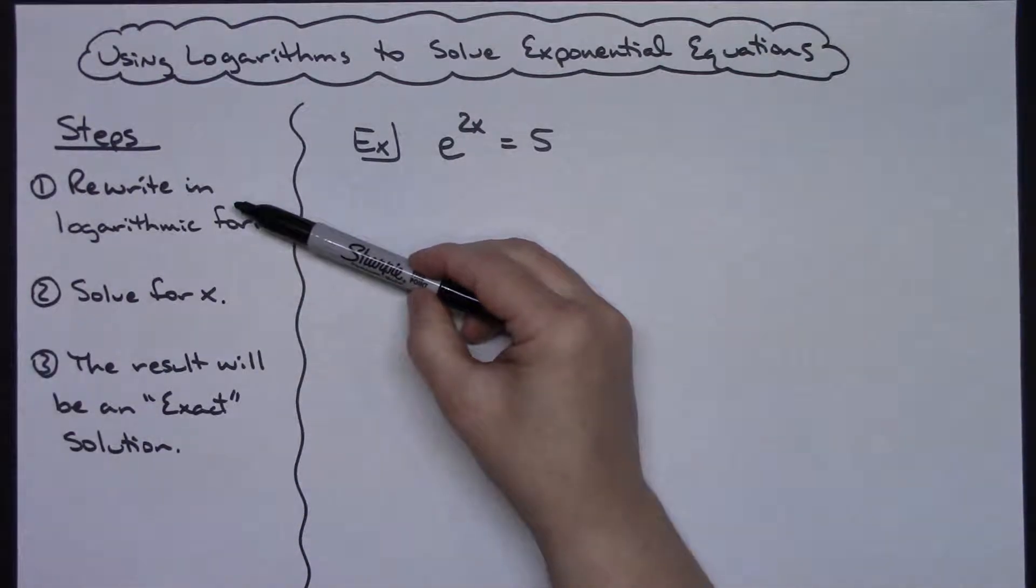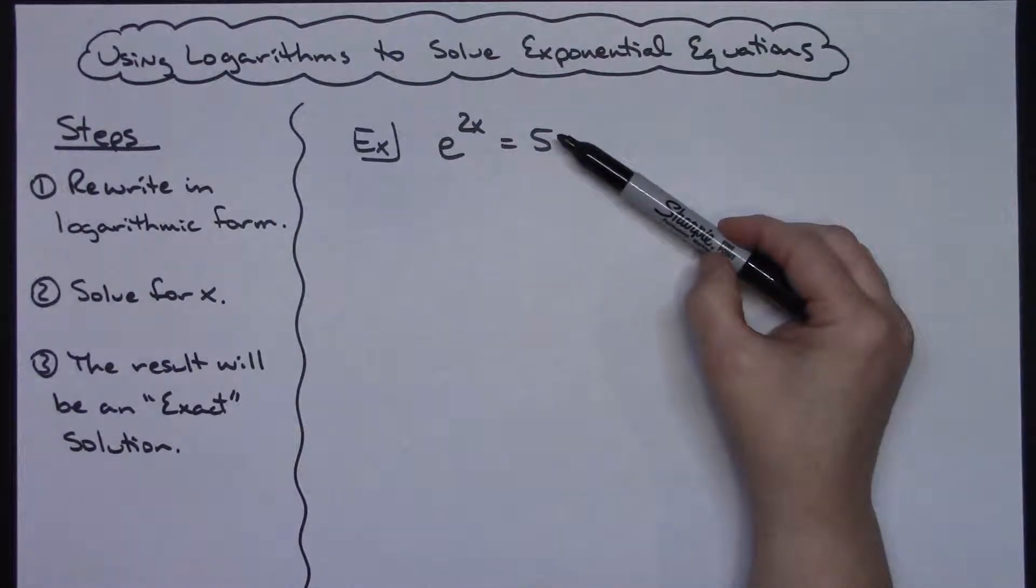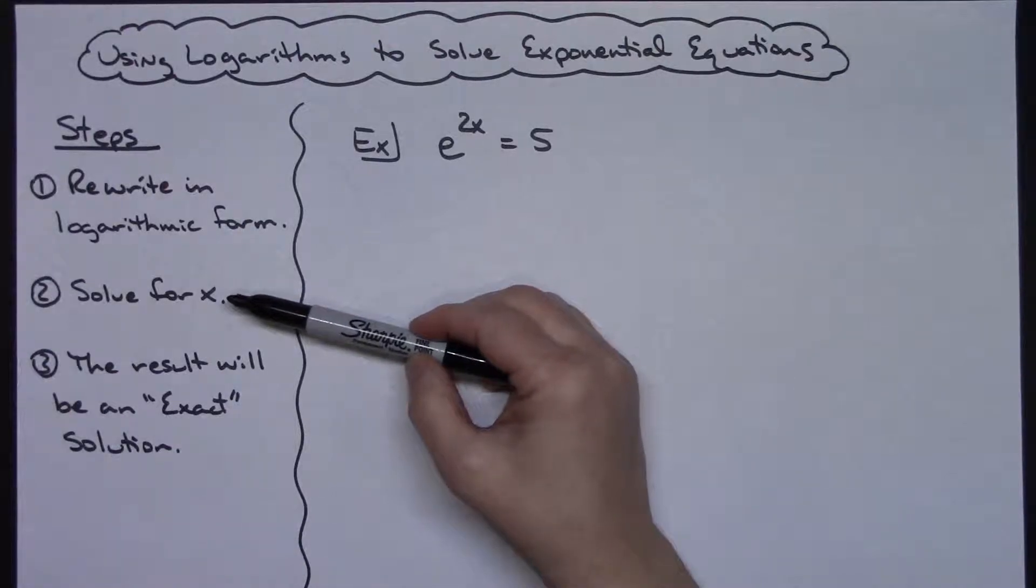General steps here: I can very easily rewrite this into logarithmic form because it is such an easy exponential equation. After I do that, then I should have an equation that I can pretty simply solve for x.